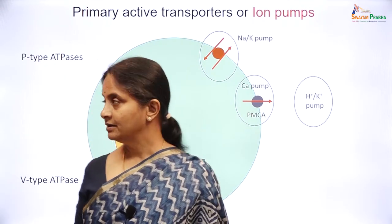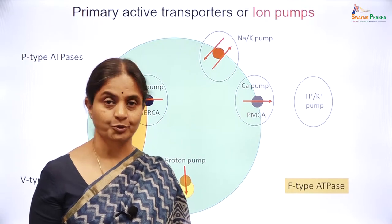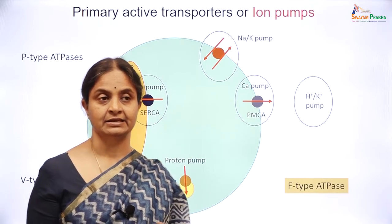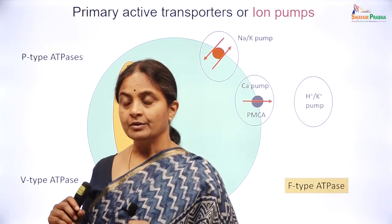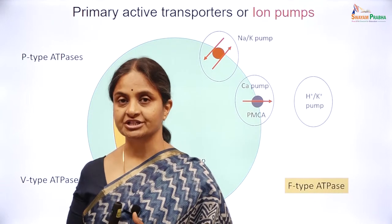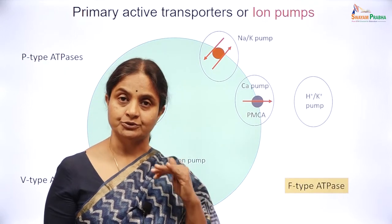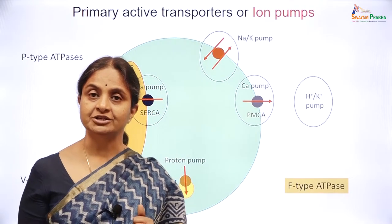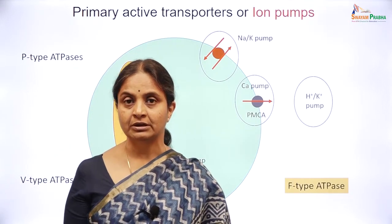Having seen P- and V-type ATPases, we now consider a special type: the F-type ATPase, also known as ATP synthase. While P- and V-type ATPases use energy from cleaving ATP to move an ion against its concentration gradient, the F-type ATPase does the reverse — it allows protons to move along their concentration gradient and captures the energy released by this downhill movement to generate ATP.